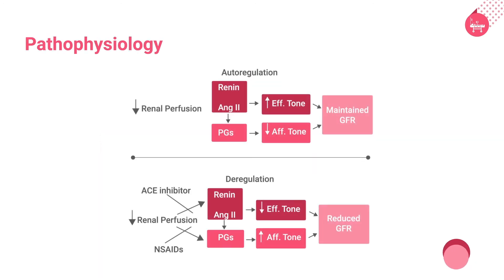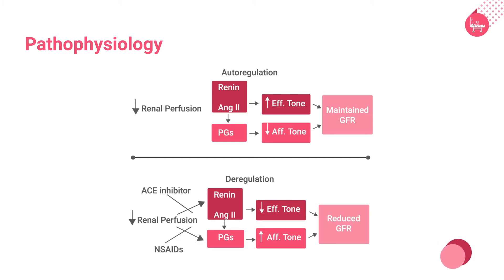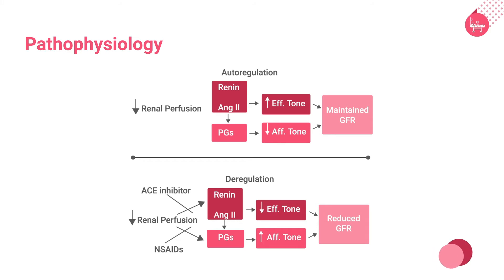Regarding the pathophysiology of AKI: prerenal azotemia occurs when renal perfusion pressure decreases to a point at which GFR falls. Normalization of renal blood flow, if possible, promptly restores renal function.